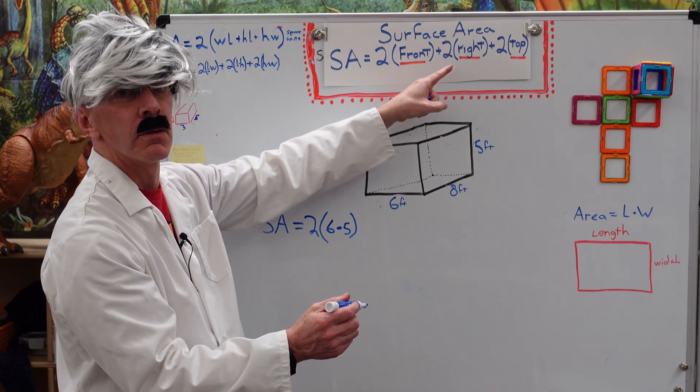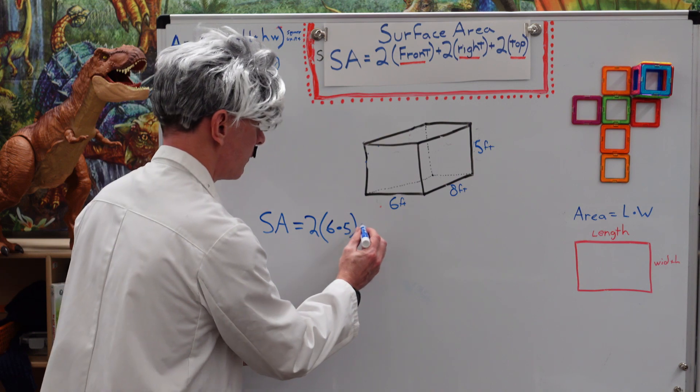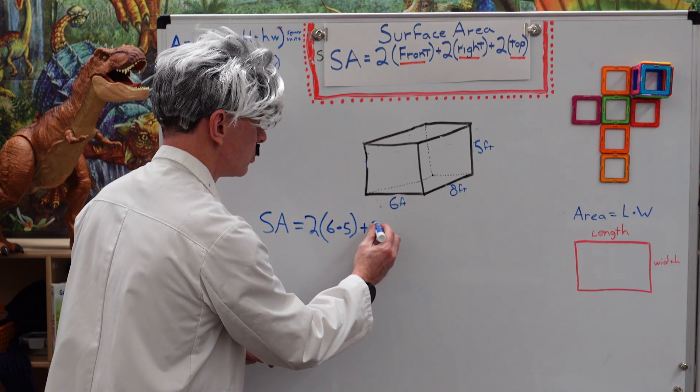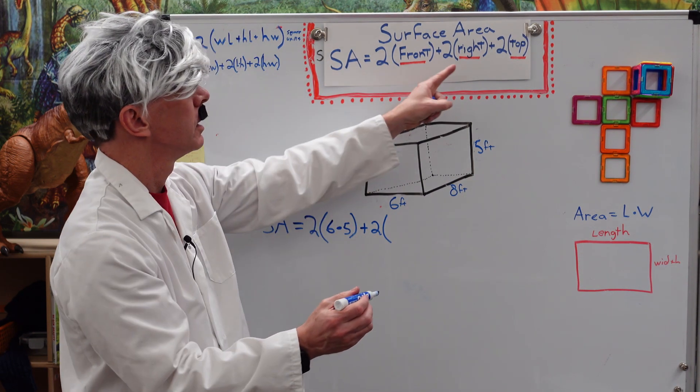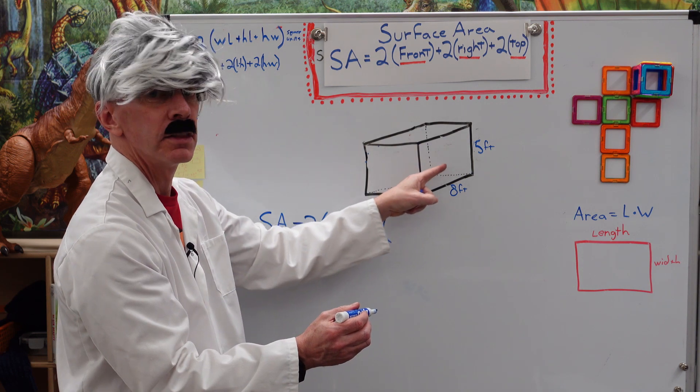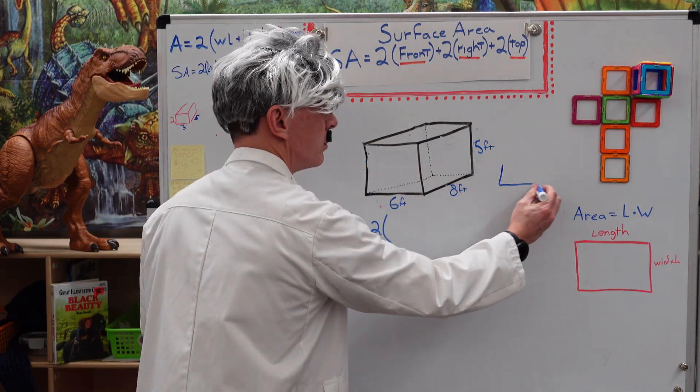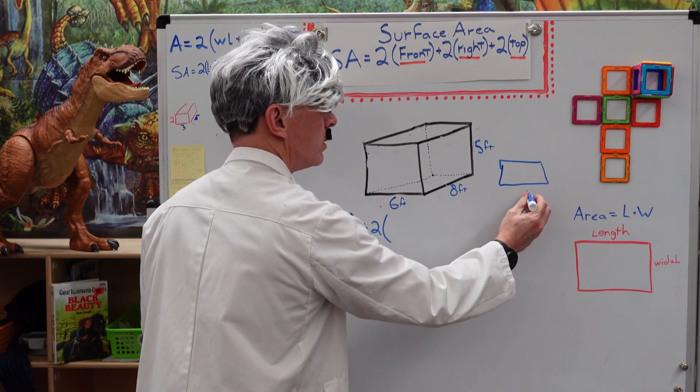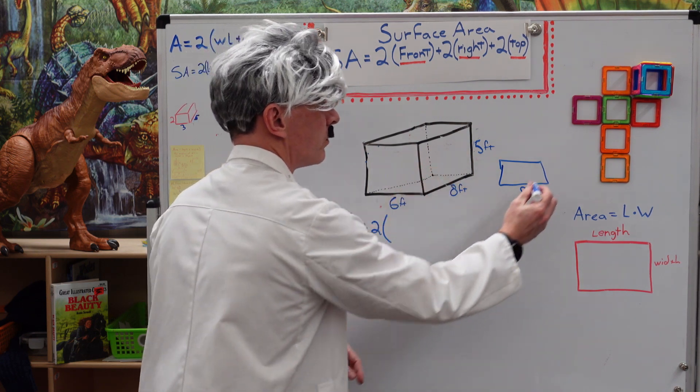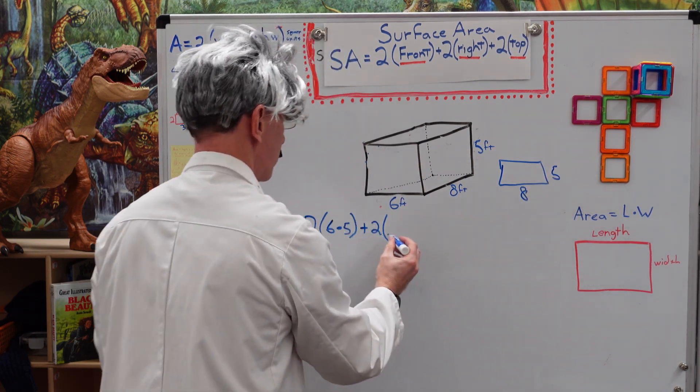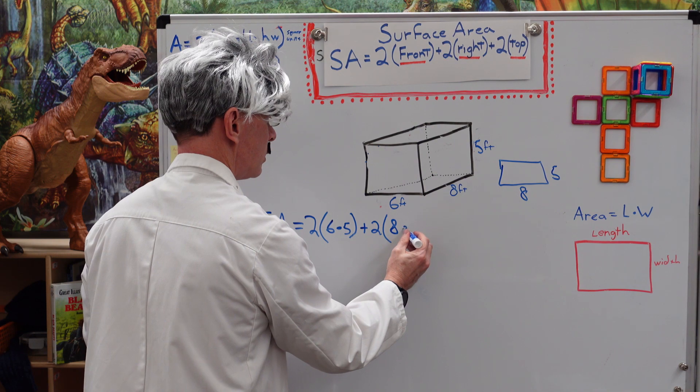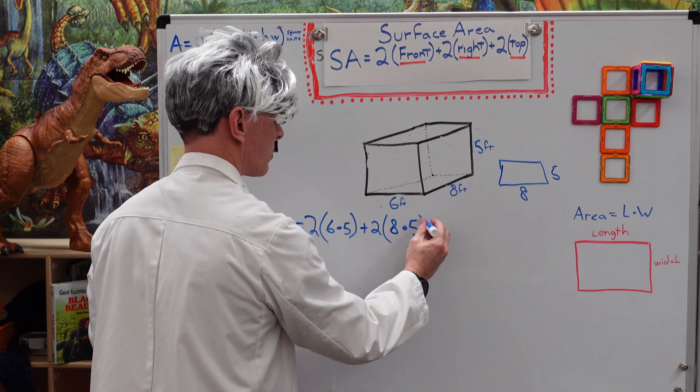On to the righty and the lefty. So, I have plus 2 times the right. This is the right. If you want to, you can make a little rectangle here and you put 8 and you put 5. So, I have 8 times 5. Very good.